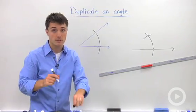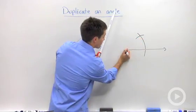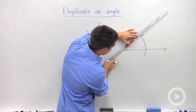So now you can take your pen, or in my case a marker, and you're going to connect that point of intersection with your vertex, thereby duplicating your angle.